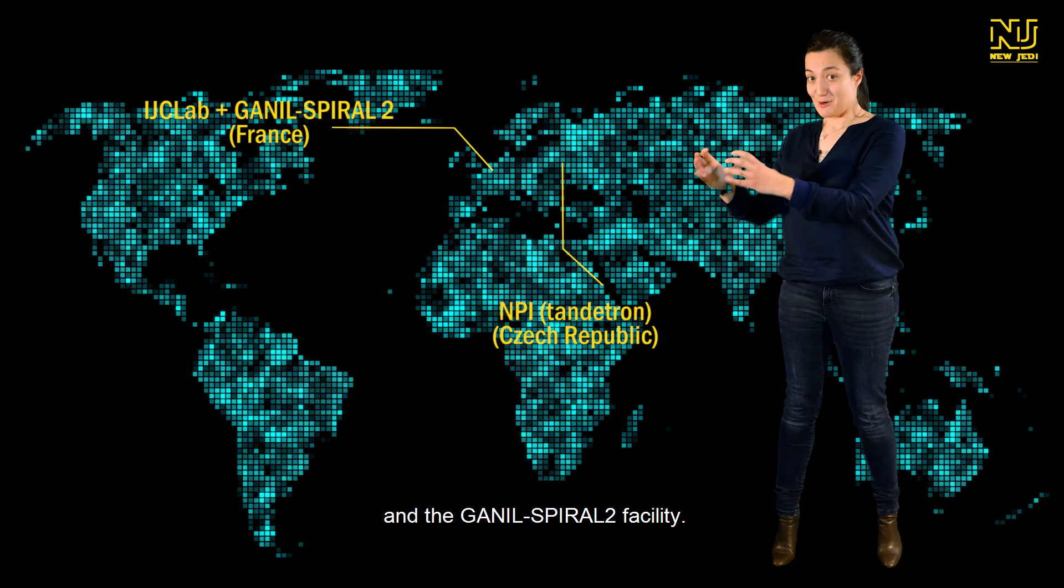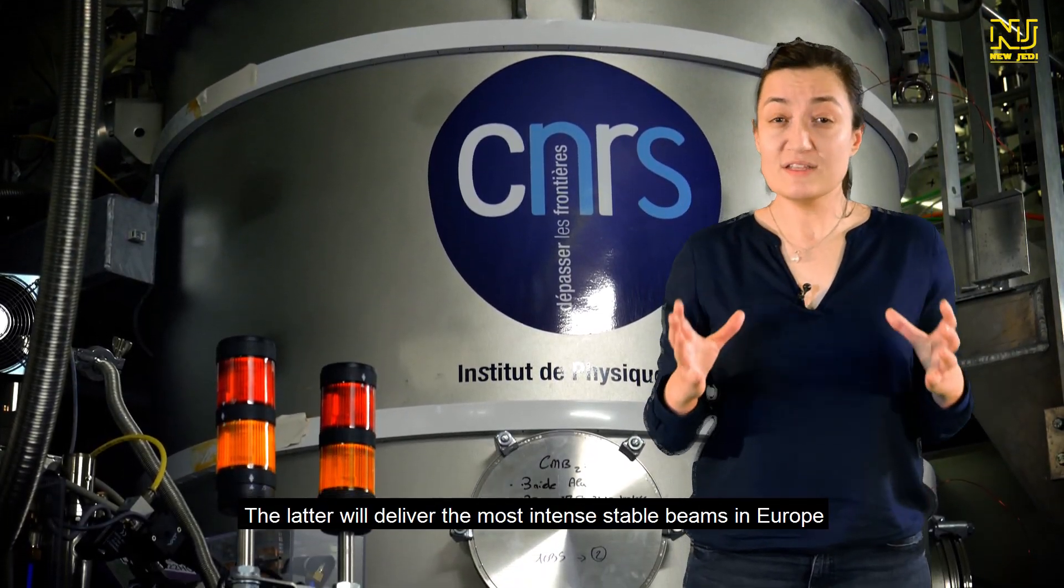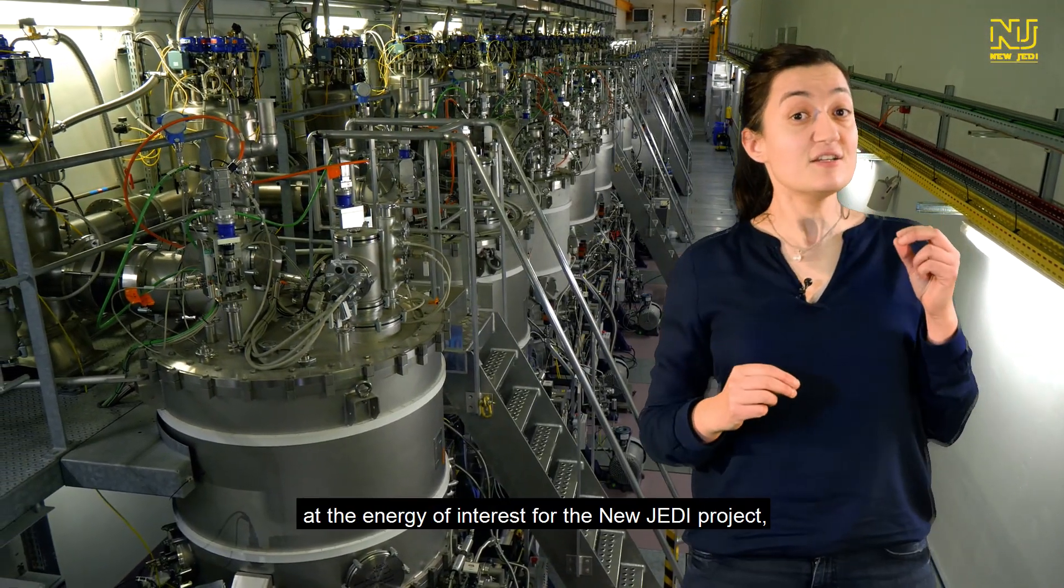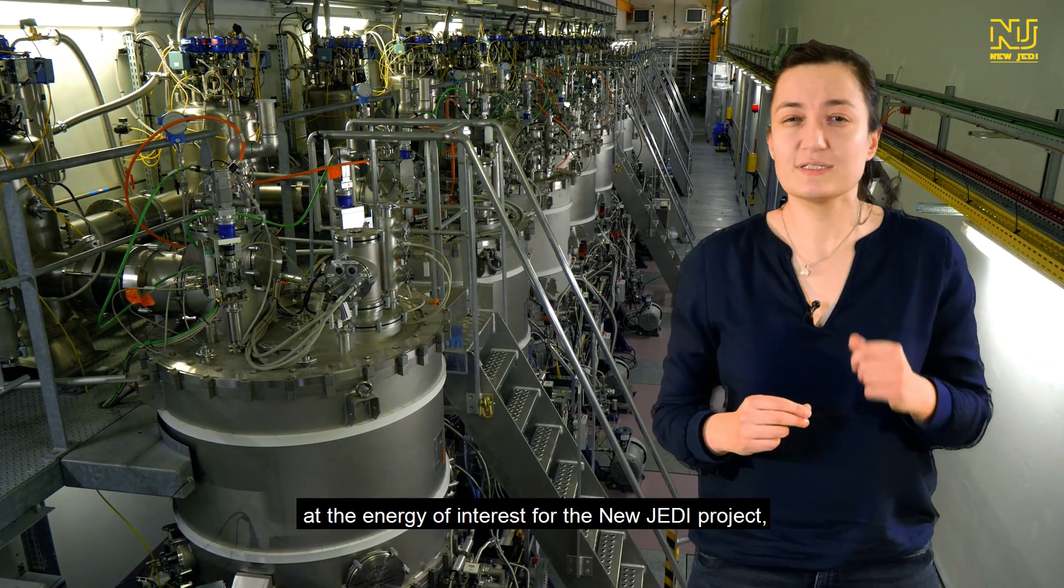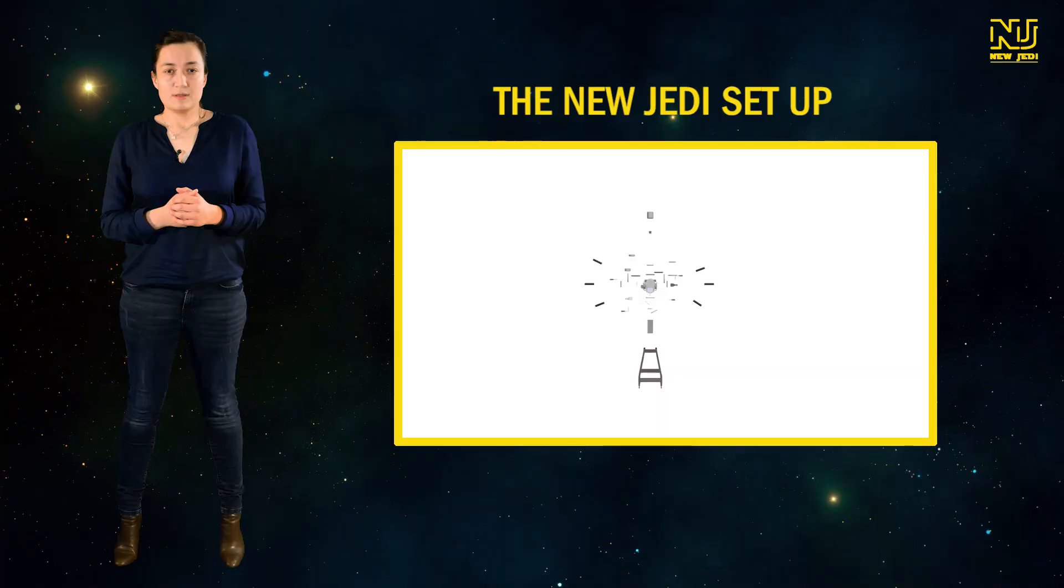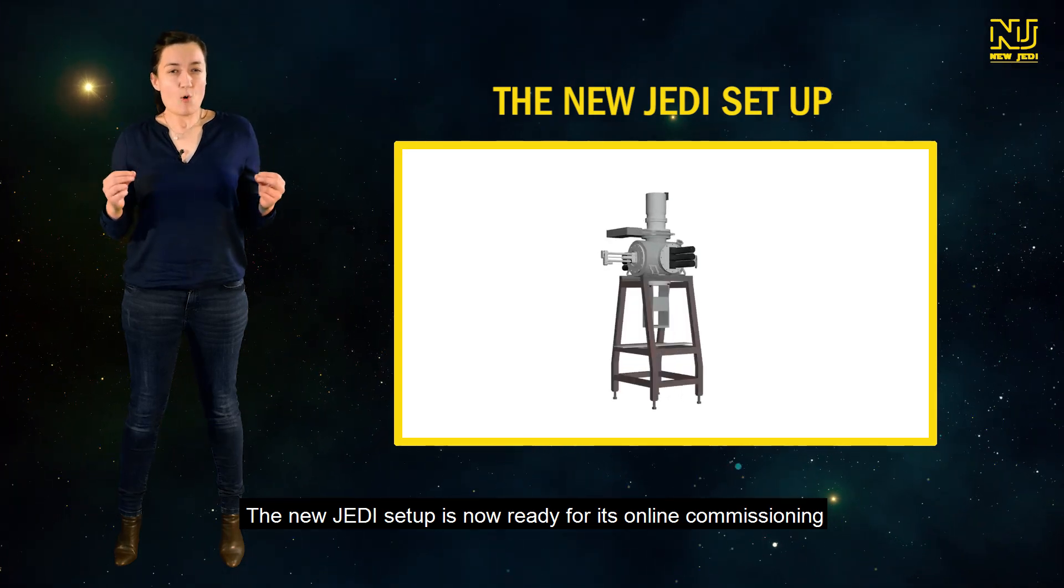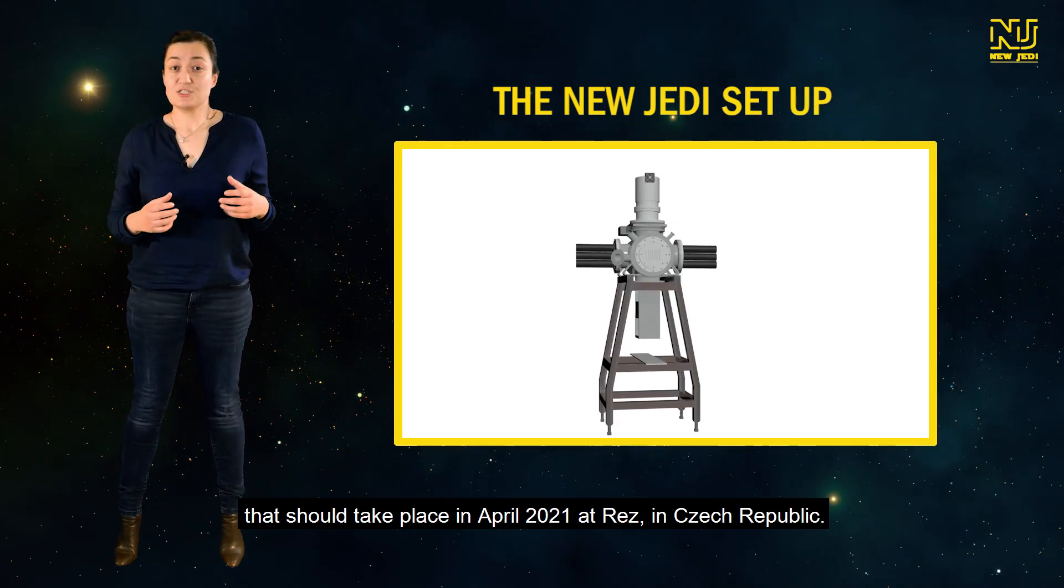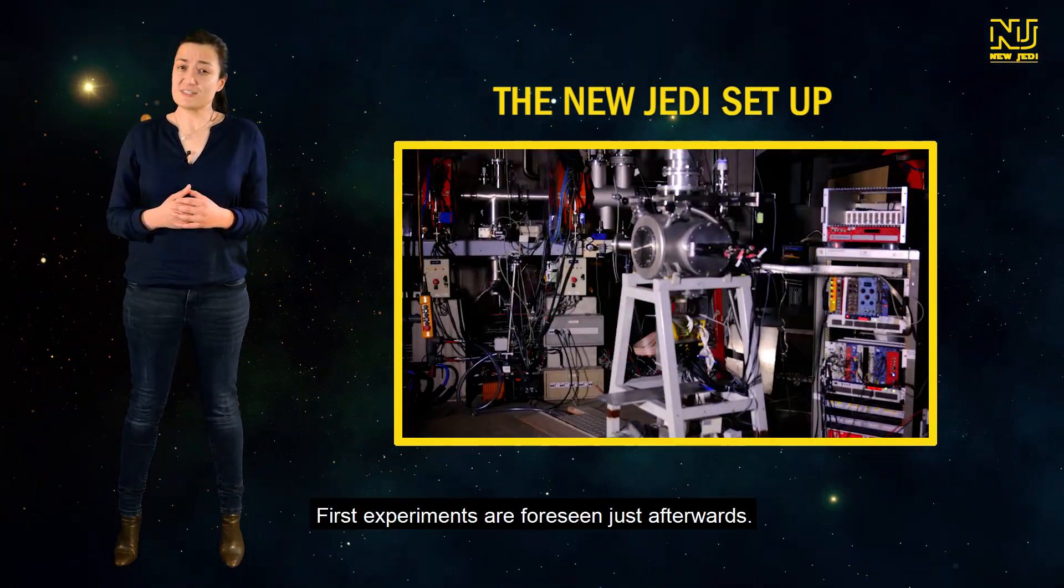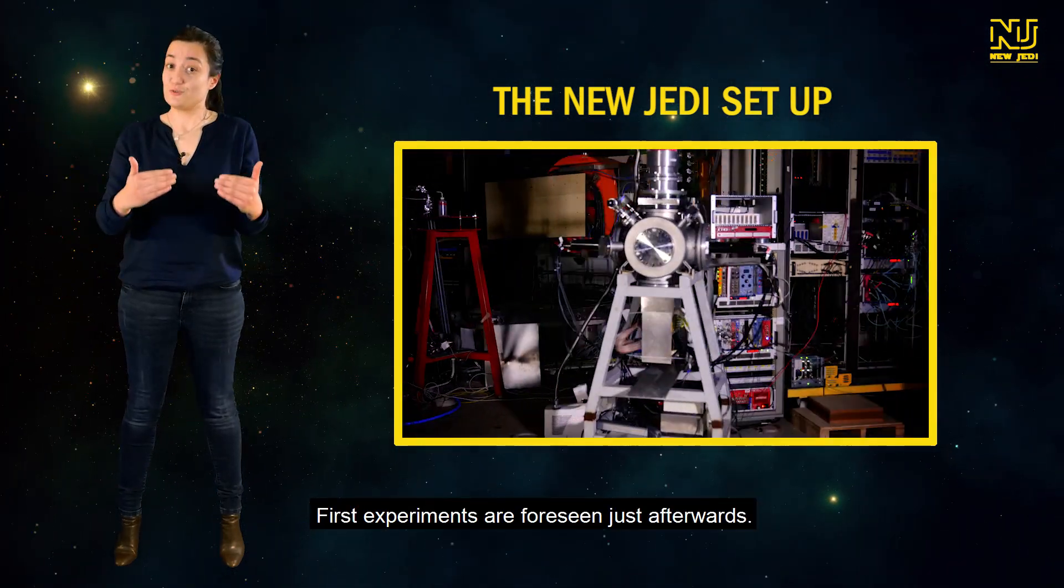And the GANIL SPIRAL2 facility. The latter will deliver the most intense stable beam in Europe at the energy of interest for the New JEDI project, setting Europe at the heart of dark sector studies. The New JEDI setup is now ready for its online commissioning that should take place in April 2021 at RESS in Czech Republic. First experiments are foreseen just afterwards.